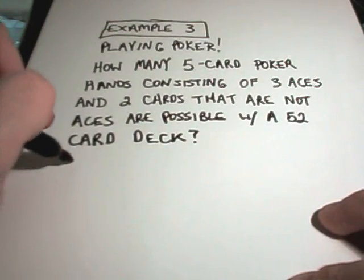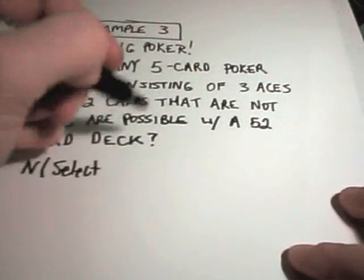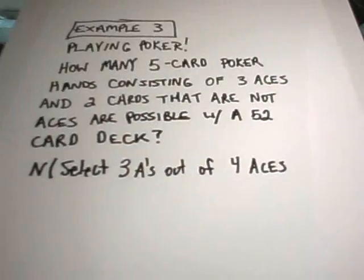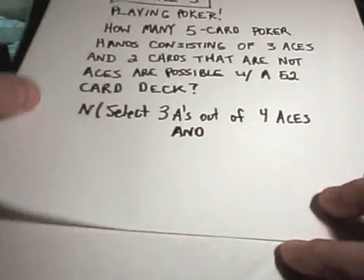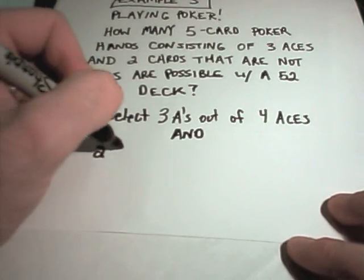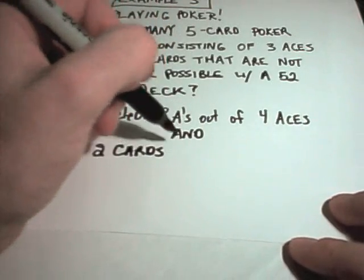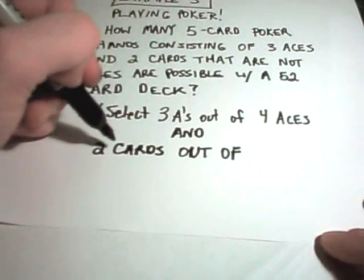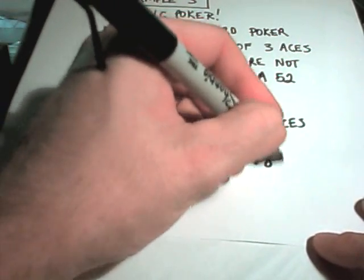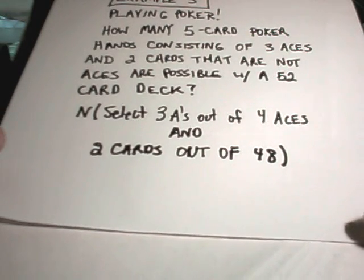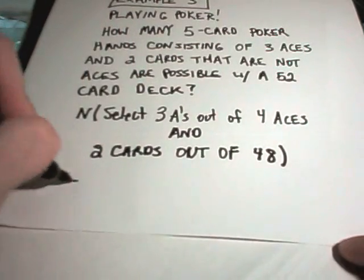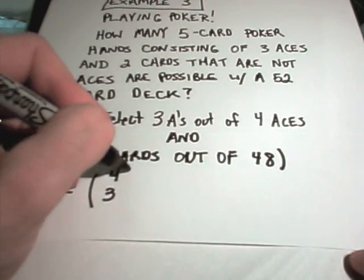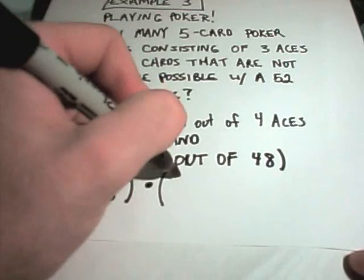So this one's a touch different because what do you have to do? We're looking for the number of ways that you can select three aces out of four aces. And we're also looking for one other event to occur. We then want how many other two cards that are not aces. Well, let's think about it. There's 52 cards. We don't want any one of the four aces, which means we need to select another two cards out of a possible 48 choices. There's 48 non-ace cards. Again, and statements, if you go back to the multiplication principle, indicate multiplying.